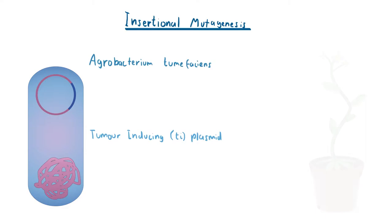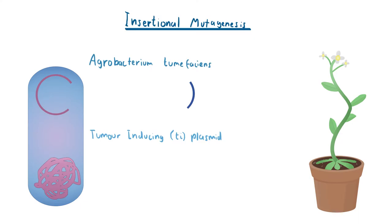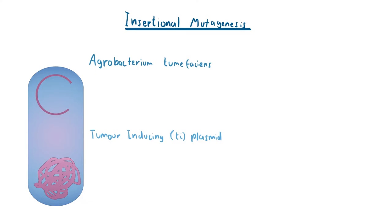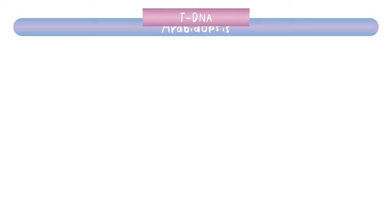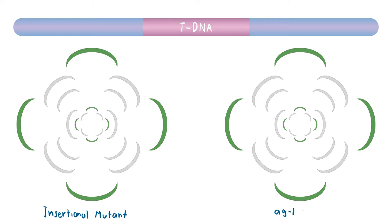This was facilitated by Agrobacterium, a bacteria which contains a tumor-inducing plasmid. Agrobacterium exploits plants by transferring DNA from the Ti plasmid to the plant. This transferred DNA, or T-DNA, integrates into the plant's genome and encodes for food for the bacteria, whereas it causes disease in the plants, similar to how mosquitoes exploit us for food and can harm us by infecting us with diseases. In our case, the T-DNA was inserted into the Arabidopsis genome, and this insertional mutant had the same phenotype as the Ag1 mutant.